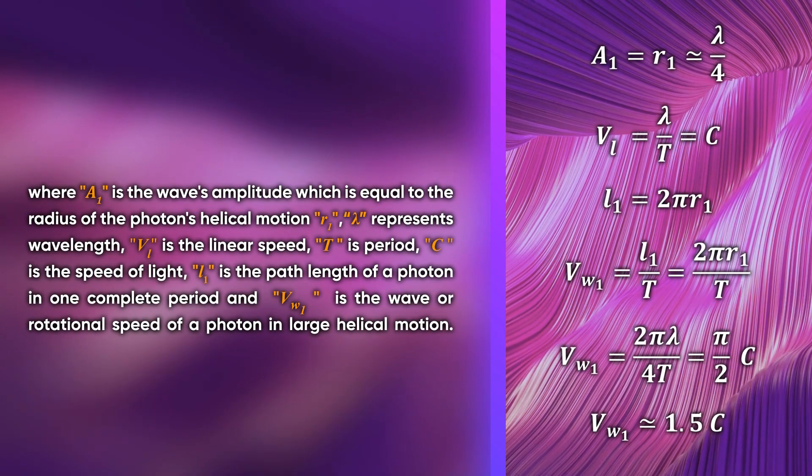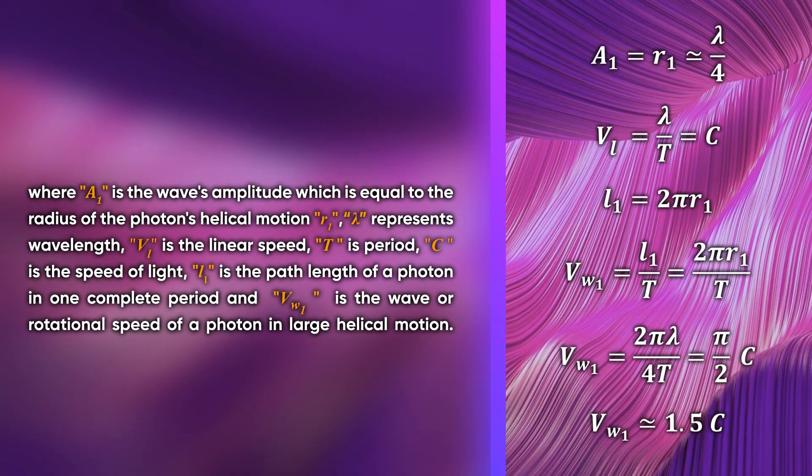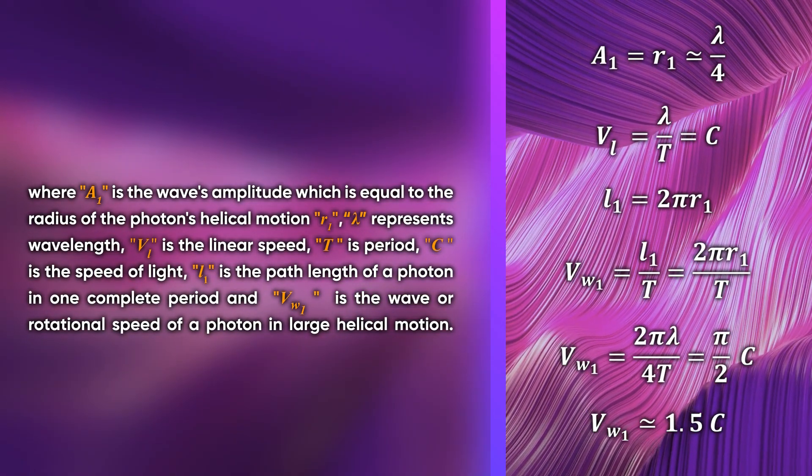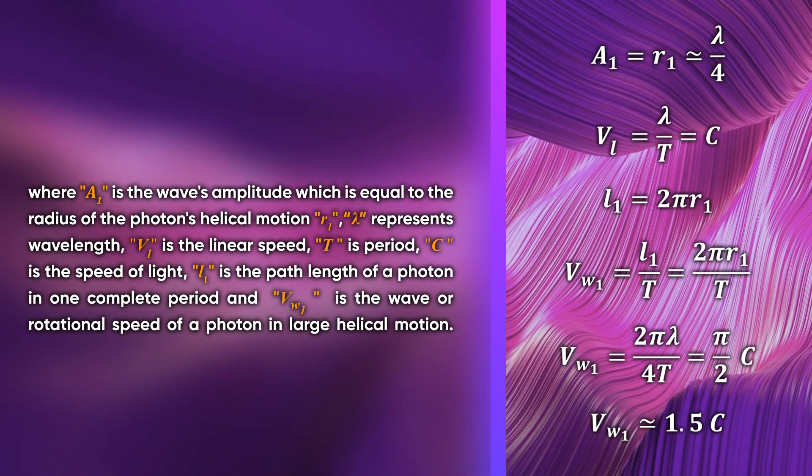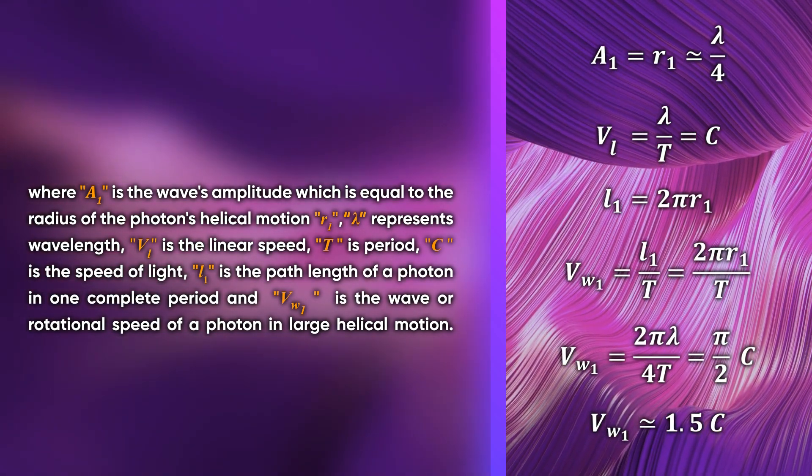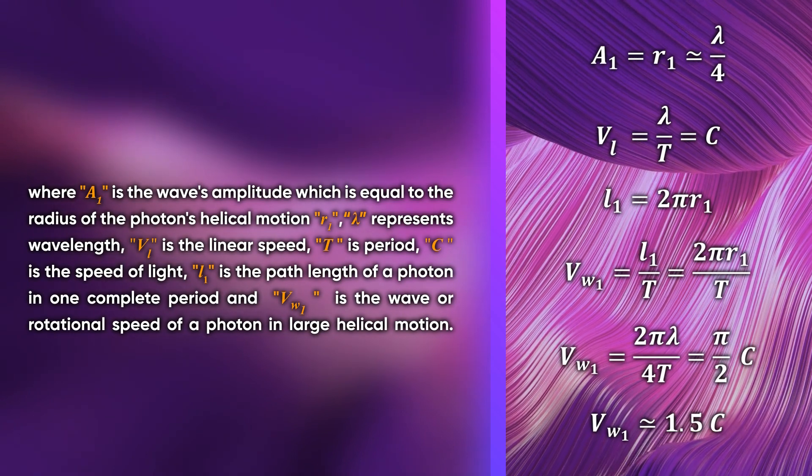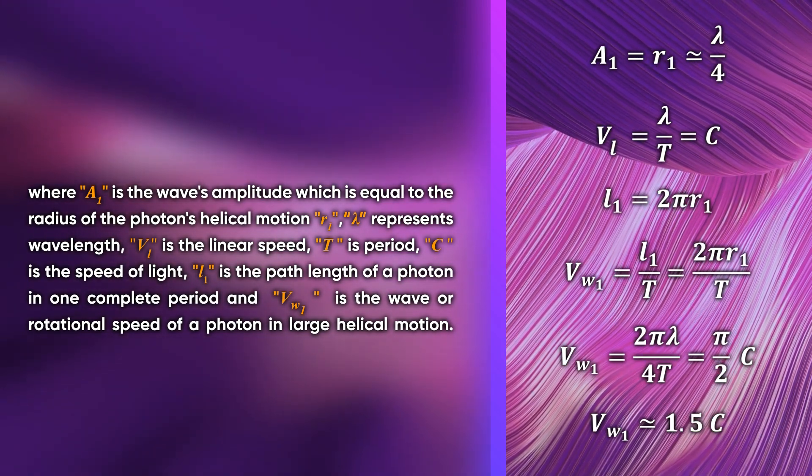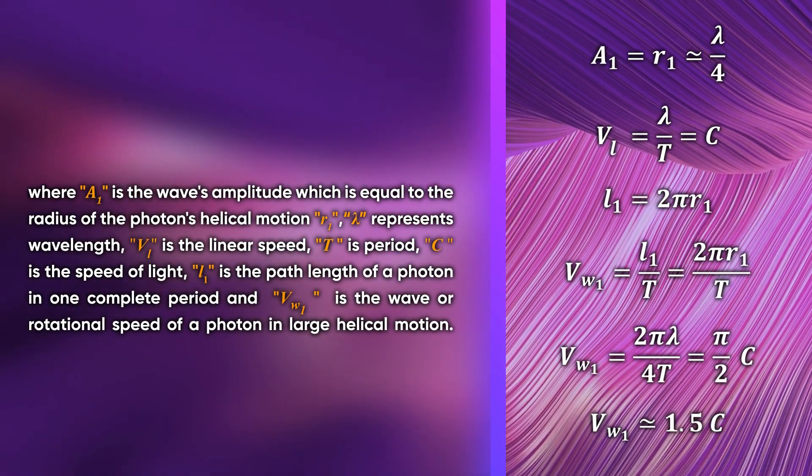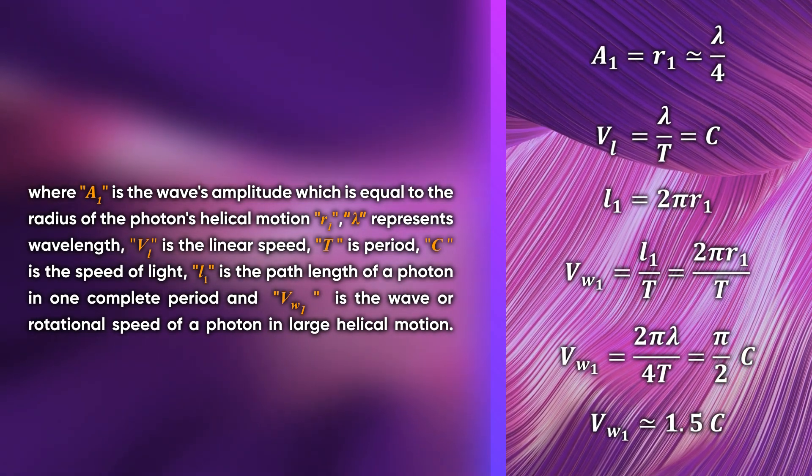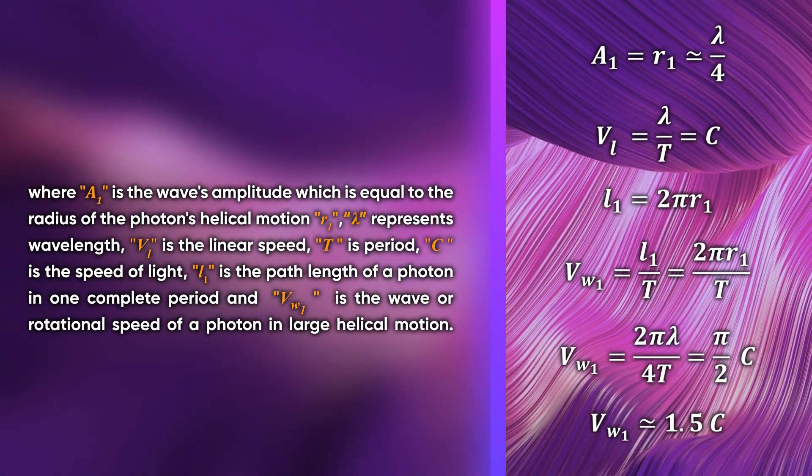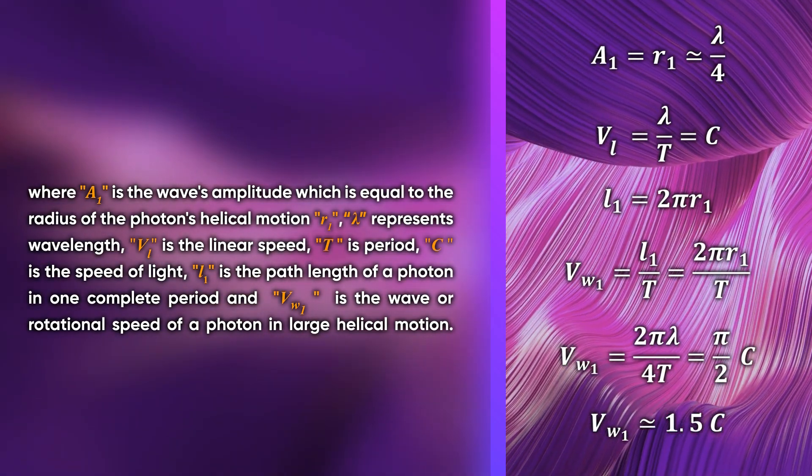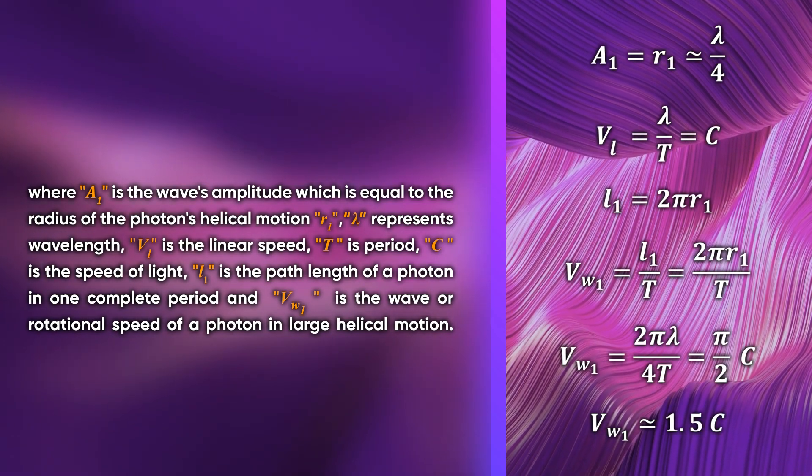Where A1 is the wave's amplitude which is equal to the radius of the photon's helical motion r1, λ represents wavelength, v_l is the linear speed, T is period, c is the speed of light, L1 is the path length of a photon in one complete period, and v_w1 is the wave or rotational speed of a photon in large helical motion.